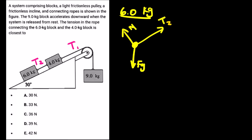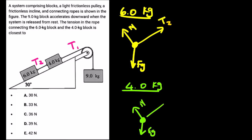Looking at the free body diagram of the 4.0 kg block, we have FG, we have normal force, we have T1. Remember that this system will move in this direction, then the 4 kg block will move in this direction due to T1, and this will move in this direction due to T2. So we have T1 and T2 here. This is the free body diagram of the 4 kg block. And then looking at the free body diagram of the 9.0 kg block.